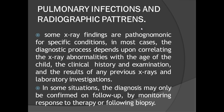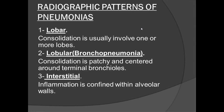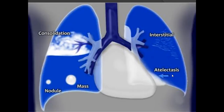Coming to pulmonary infections: radiographic pattern recognition forms the cornerstone of successful X-ray interpretation. The most common causative organisms are viruses, bacteria, and mycoplasma. The radiographic patterns are lobar pneumonia, bronchopneumonia, and interstitial pneumonia. Lobar pneumonia involves one or more lobes; bronchopneumonia is consolidation centered around the terminal bronchioles; interstitial inflammation is confined to the alveolar walls and interstitial spaces.